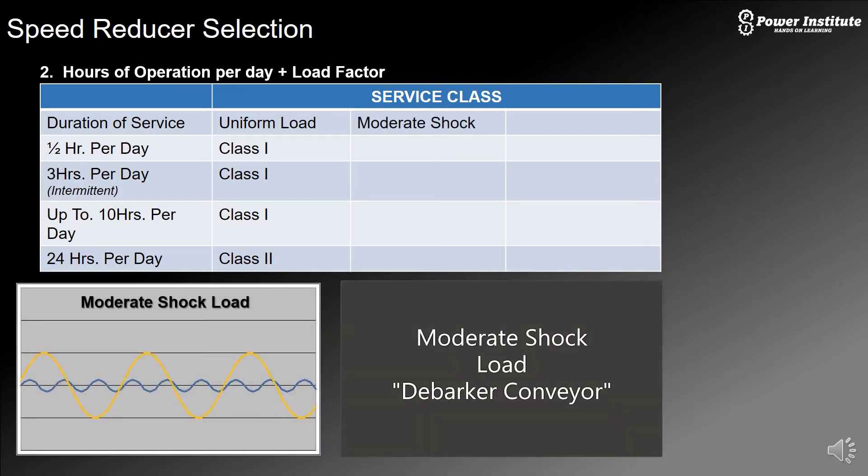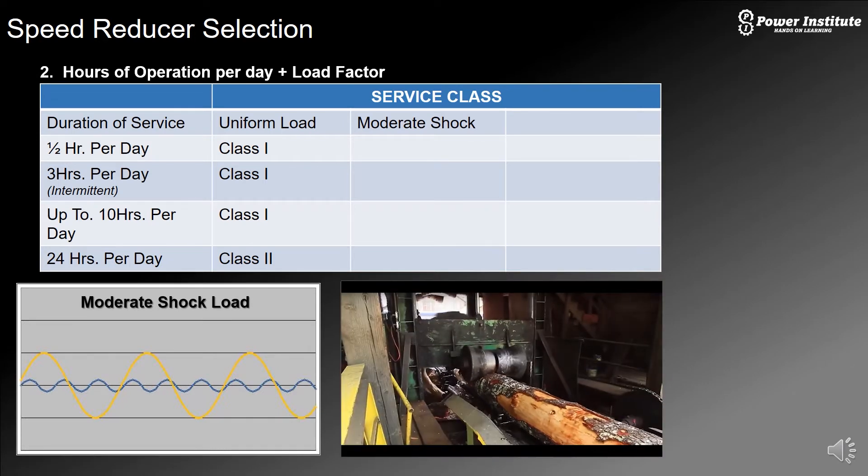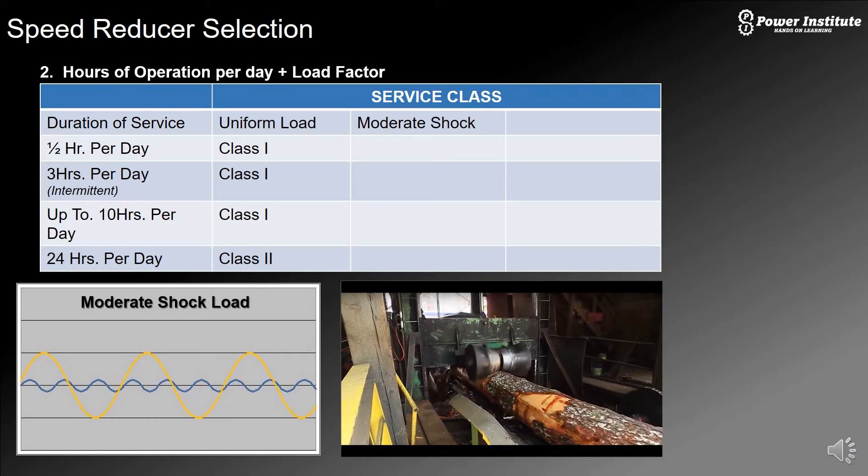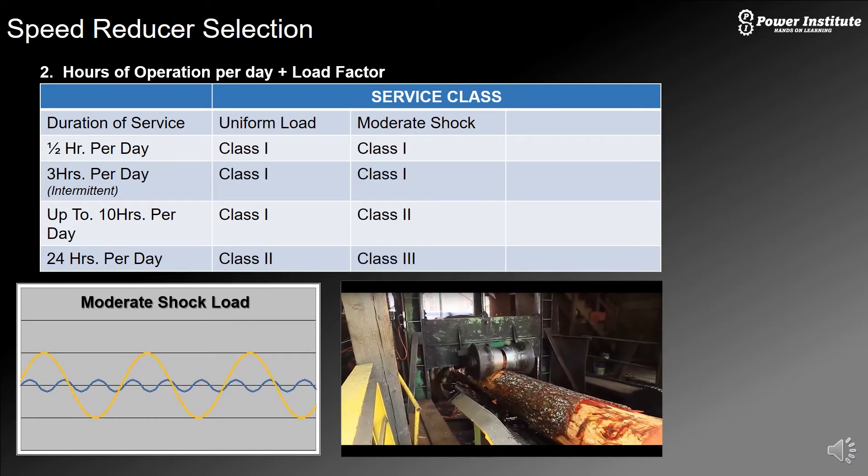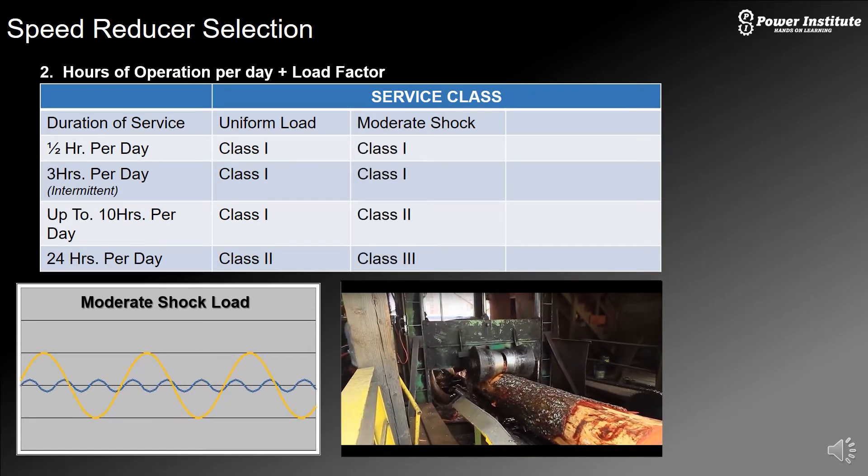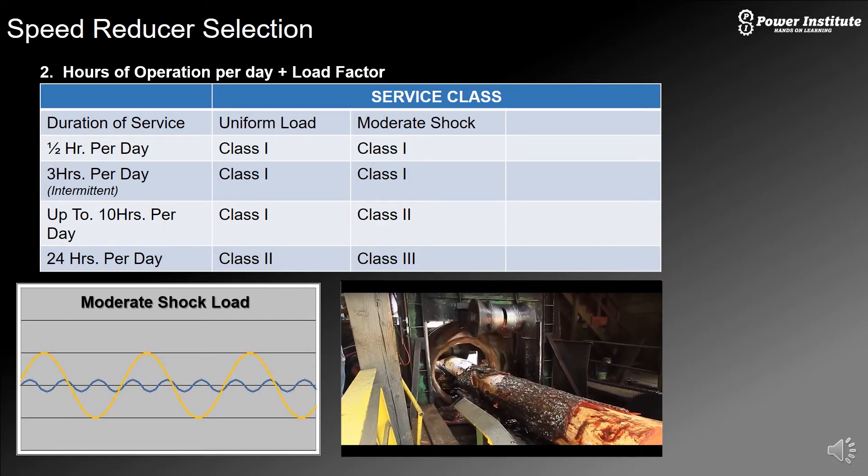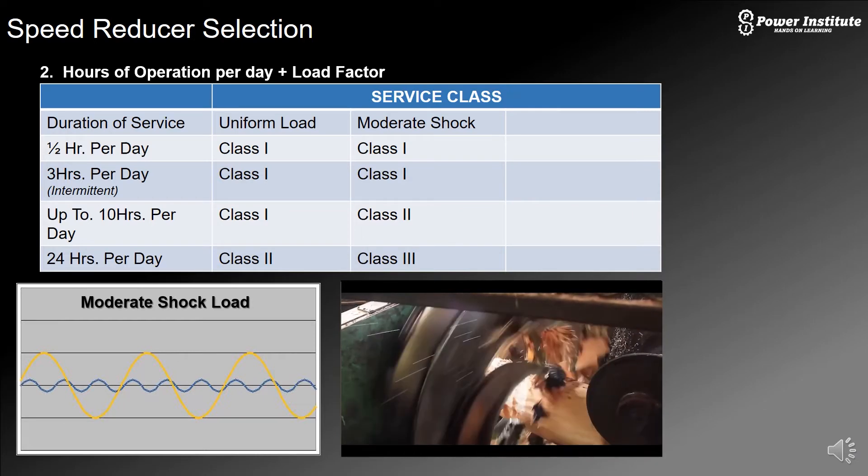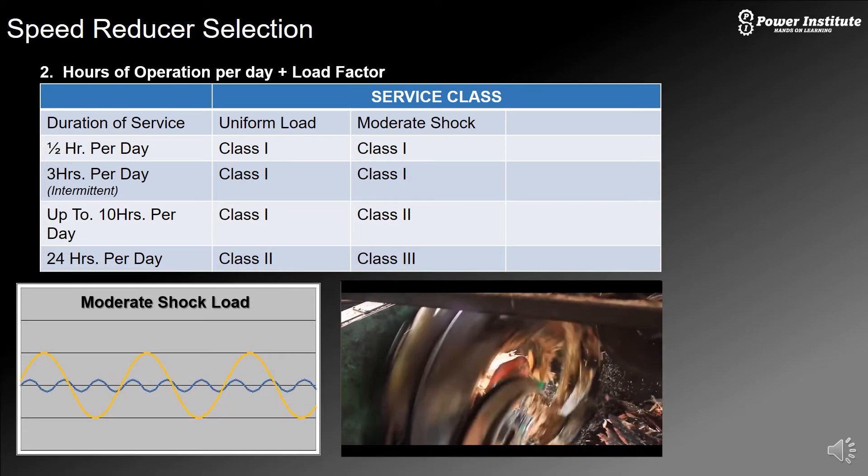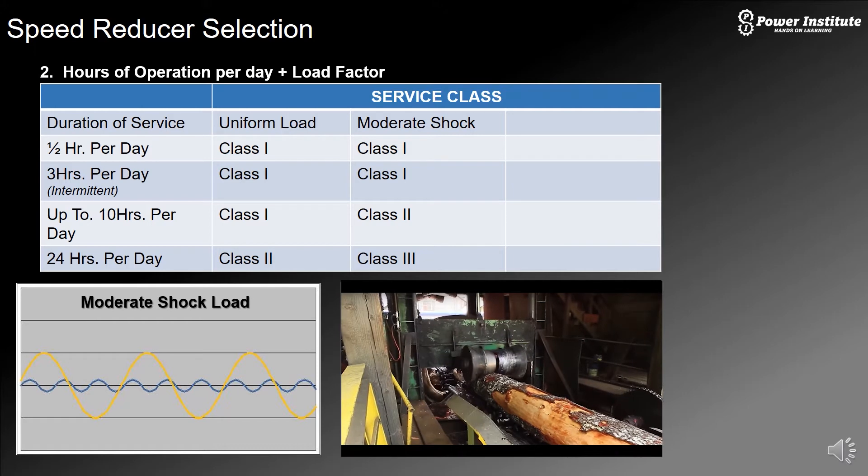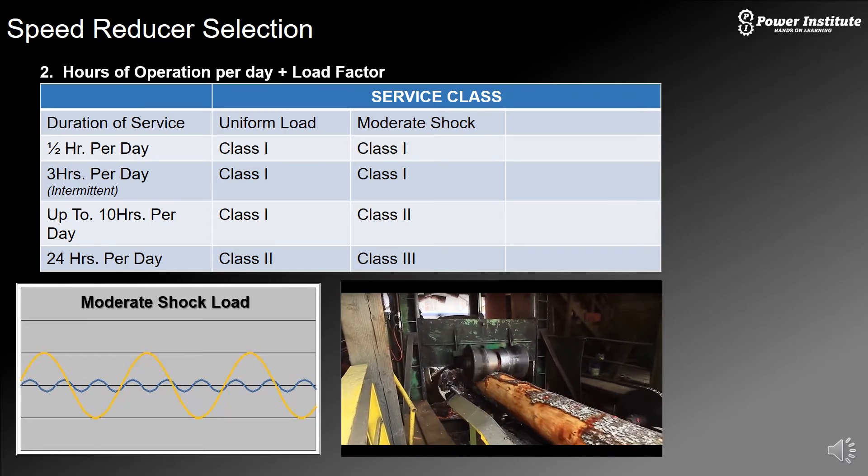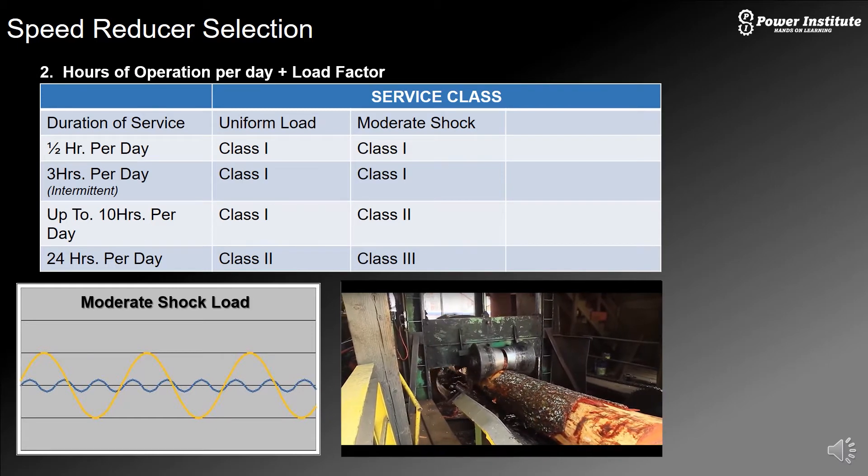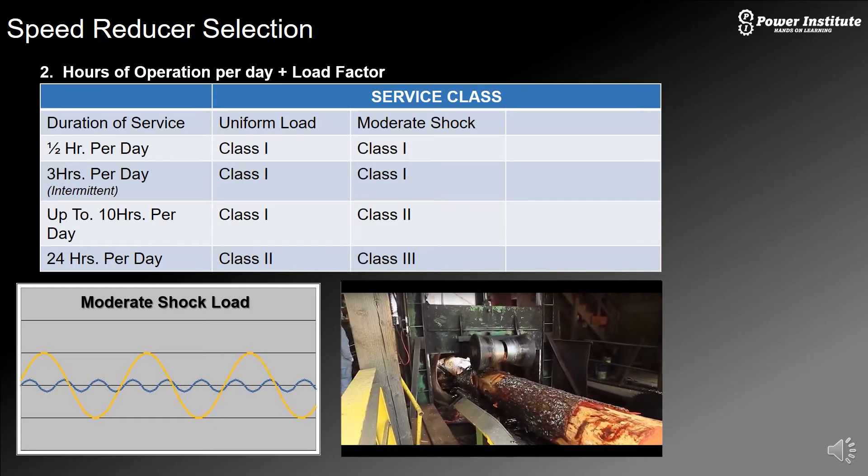Then we go to a moderate shock. Moderate shock load is a little bit more than that. Obviously there's a little bit of a beating on the reducer. Here you can see that the log is going through and as that blade is spinning around it's beating up on the log, but all that beating is transferred to the chain conveyor underneath as well as the gearbox. So the gearbox has to be ready for that amount of shock.